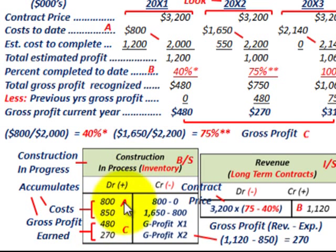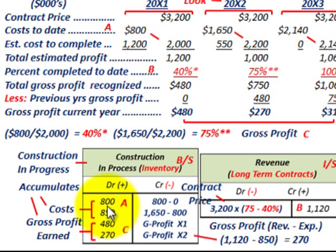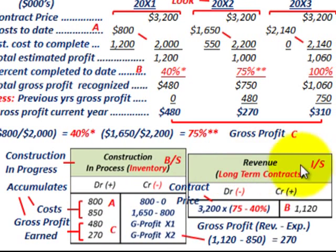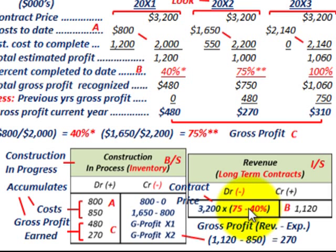So we debit Construction in Progress for the gross profit of $480 in year one and $270 in year two. You can see what's happening in this Construction in Progress inventory account — we're debiting it and increasing it for the costs accumulated each year plus the gross profit earned on the contract. Now let's move over to the revenue account on our income statement.